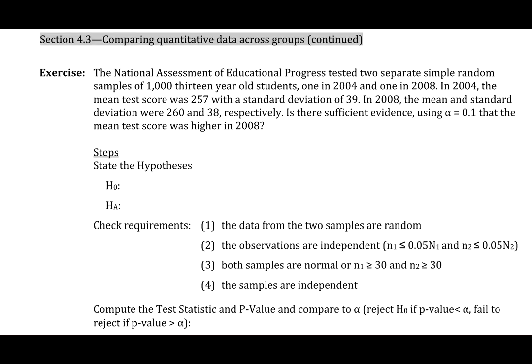In 2004, the mean test score was 257 with a standard deviation of 39. In 2008, the mean and standard deviation were 260 and 38, respectively. Is there sufficient evidence, using an alpha of 0.1, that the mean test score was higher in 2008?